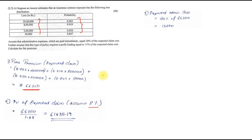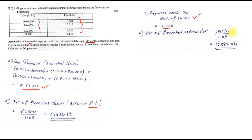Step 3: find the expected administrative cost. They have given it as 20% of expected claim, so 20% of 66,350 = 13,270. Step 4: find the PV of admin cost = 13,270 ÷ 1.08 = 12,287.04.